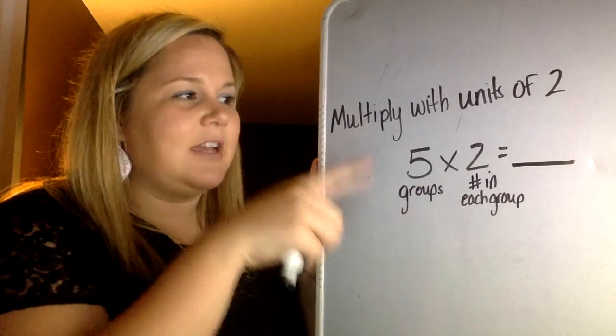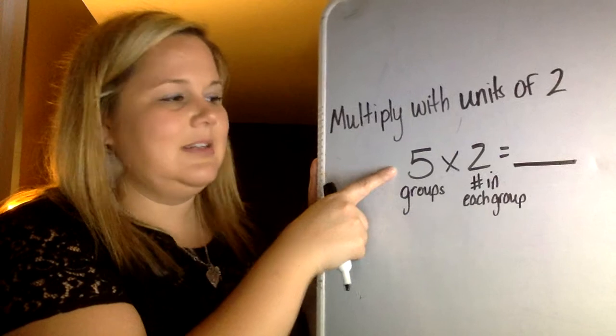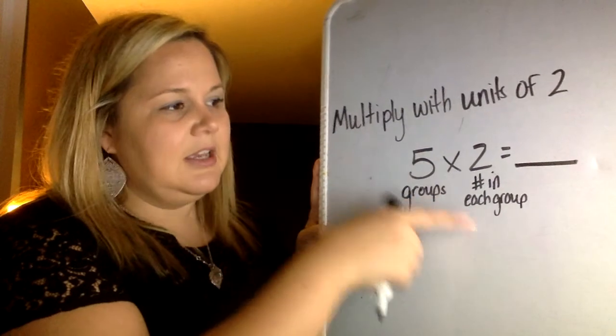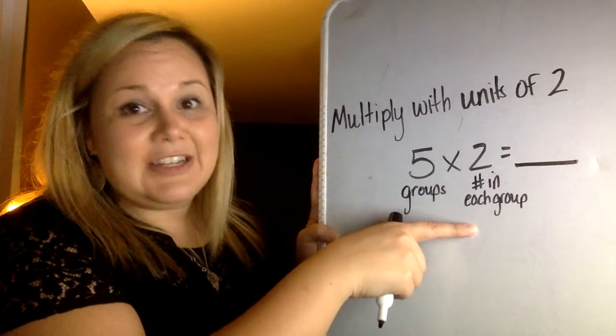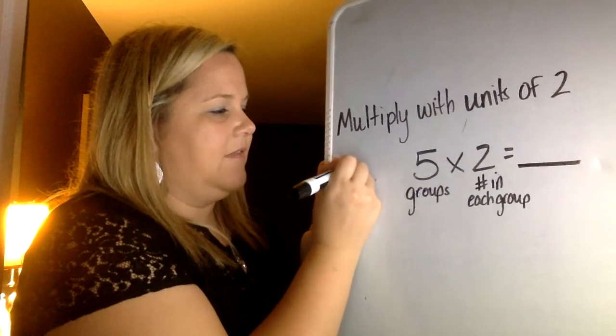So let's check out this first example. 5 times 2 equals blank. Remember, the first number in your multiplication sentence is the number of groups. The second number is how many are in each group. So if I wanted to draw an array to go along with this, I would draw my 5 groups.